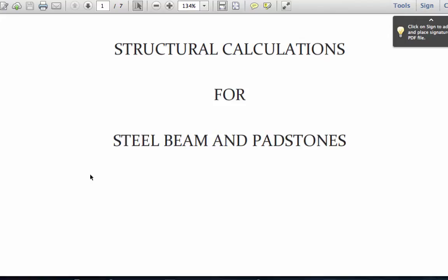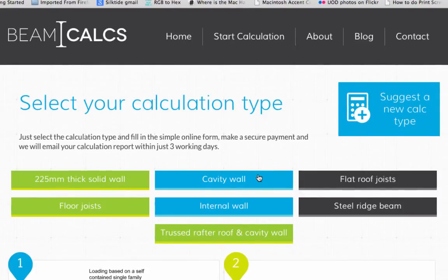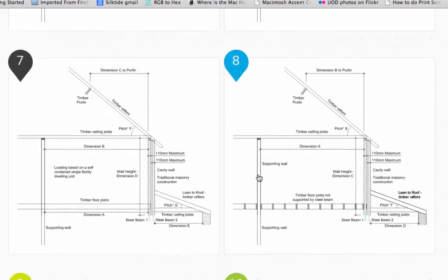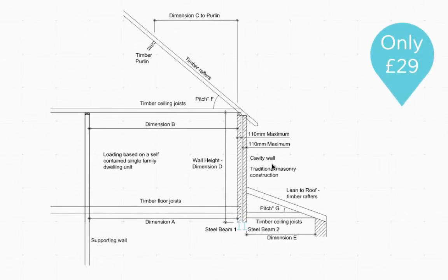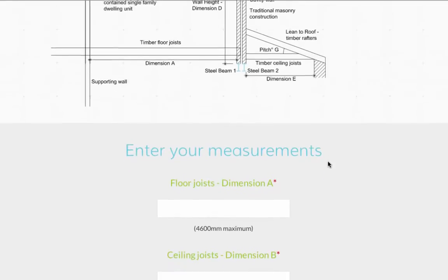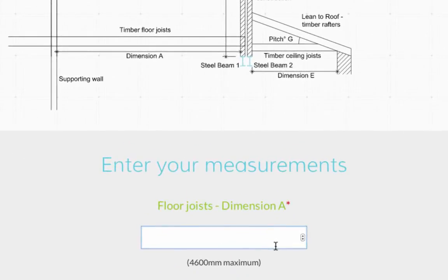Some of our calculation types ask for a bit more information, so let's look at one of those now. Calculation type 7 is for two steel beams which need to support a number of elements: a cavity wall, floor joists, ceiling joists and roof rafters for the main house, as well as ceiling joists and roof rafters for a lean-to. It's a more complicated project, so you need to enter more measurements.